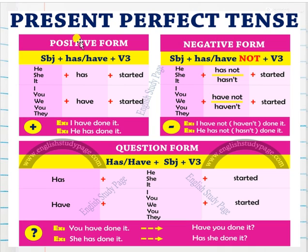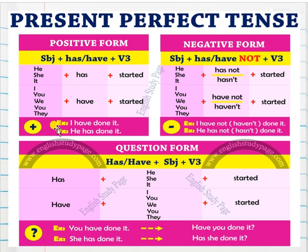The first one is the positive form. The structure is: subject first, and then has or have, plus the third form of the verb. For example, he, she, it — after those, use 'has' plus the past participle. 'Started' is a regular verb, so we add 'ed'.